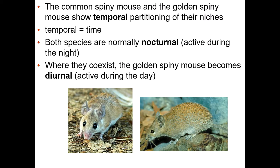Here's another type of resource partitioning: temporal partitioning, where temporal means time. Here are two different types of mice — mostly they're nocturnal, meaning active at night. When they live in the same area, one actually becomes diurnal and active during the day. So it now has a different niche and is able to survive. Natural selection doesn't always produce this type of partitioning — it's just that the ones who were able to use different resources happened to be successful; it's just as likely that one species would have gone extinct in that area.